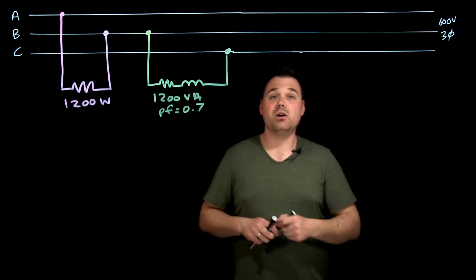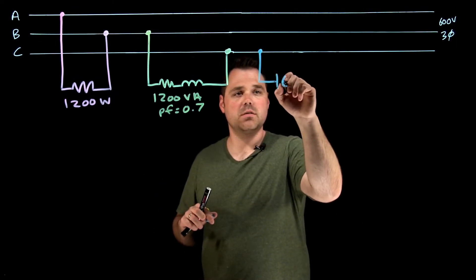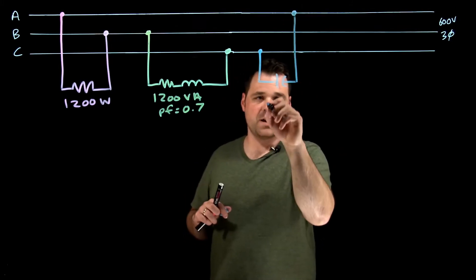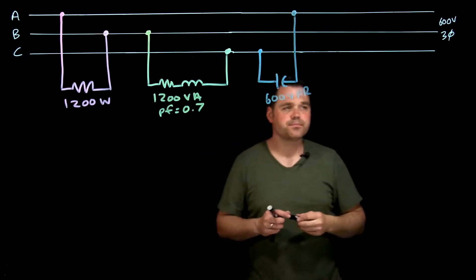Then lastly, on phase C, so going from C to A, I'm going to put a capacitor, which is 600 vars.